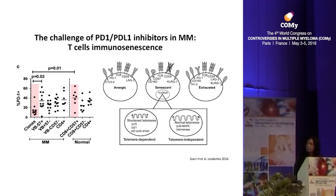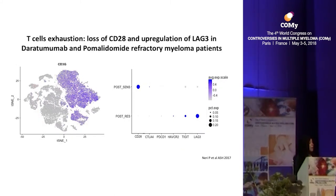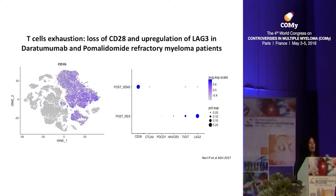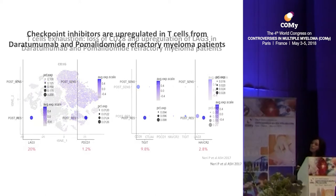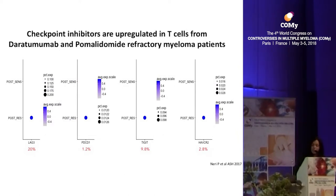We presented recently at ASH data where we looked at patients treated with daratumumab and pomalidomide and performed single-cell analysis. We discovered the main difference between patients sensitive to this drug and resistant patients was the status of the T cells — in resistant patients they were quite exhausted, lacking CD28 but instead expressing a large panel of checkpoint inhibitor ligands, particularly LAG-3 as the most expressed, and also TIM-3 and TIGIT. PD-1 was minimally expressed in this patient cohort.